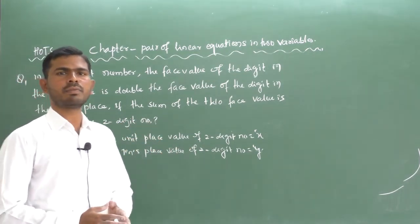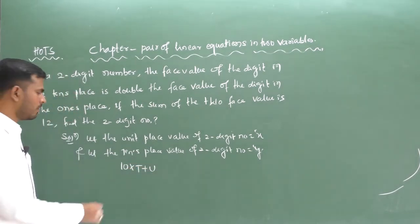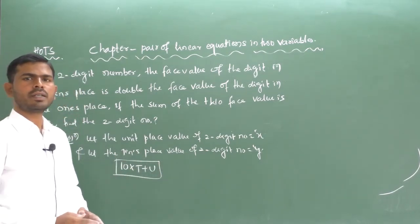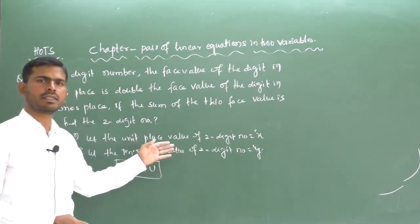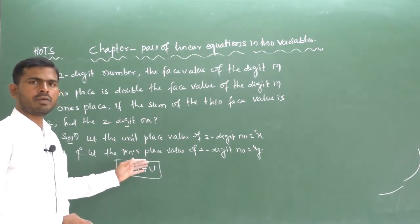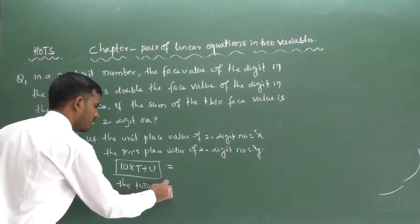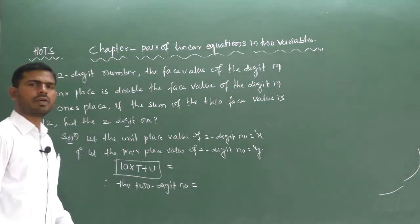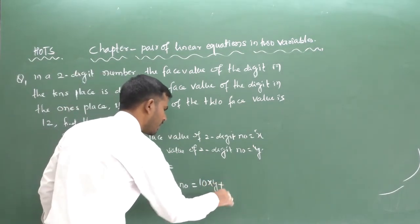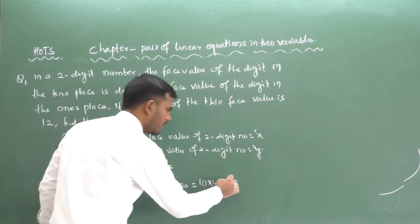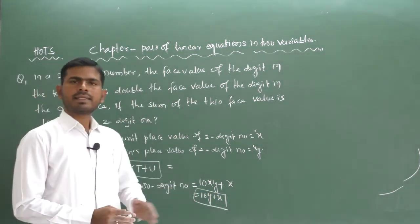What is the standard formula to write a two-digit number? The formula is: 2-digit number = 10 × (tens place value) + (units place value). So using our variables, the 2-digit number equals 10y + x. Keep this standard formula in mind: 10 × tens place value plus units place value.